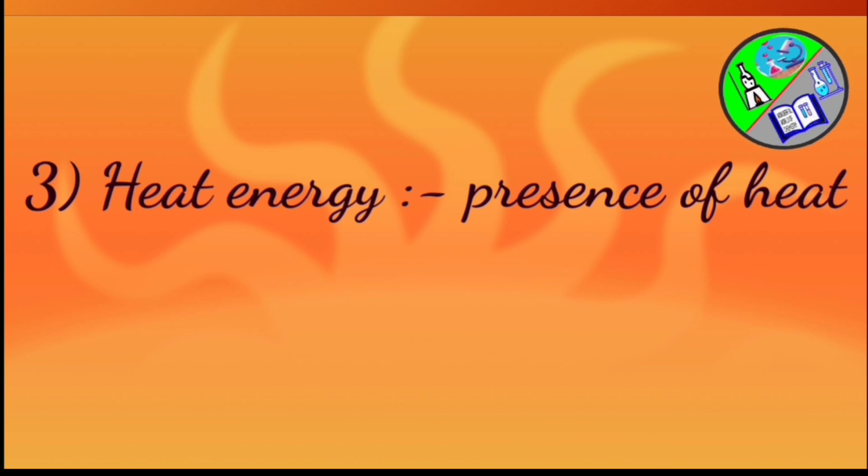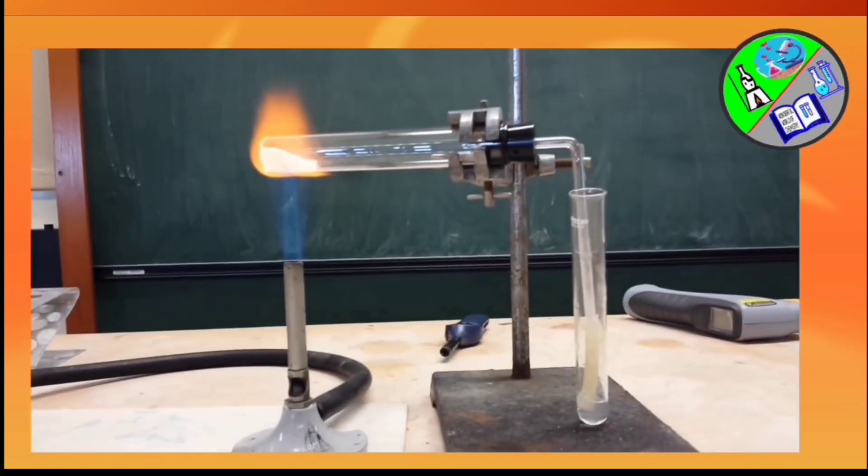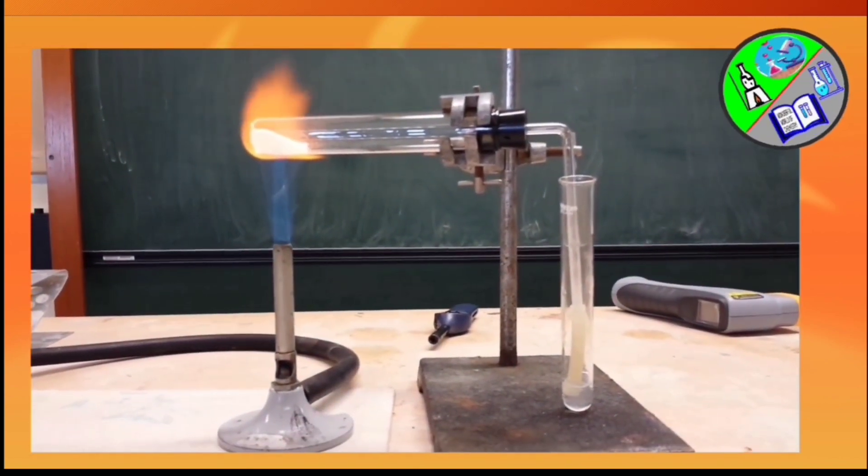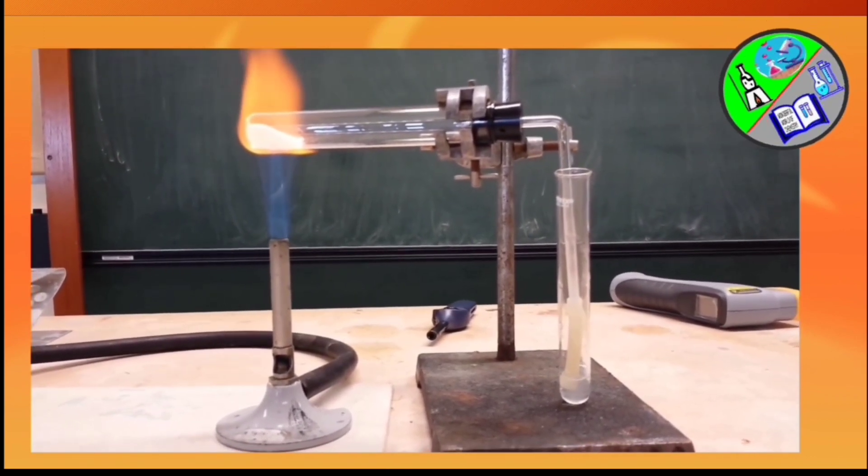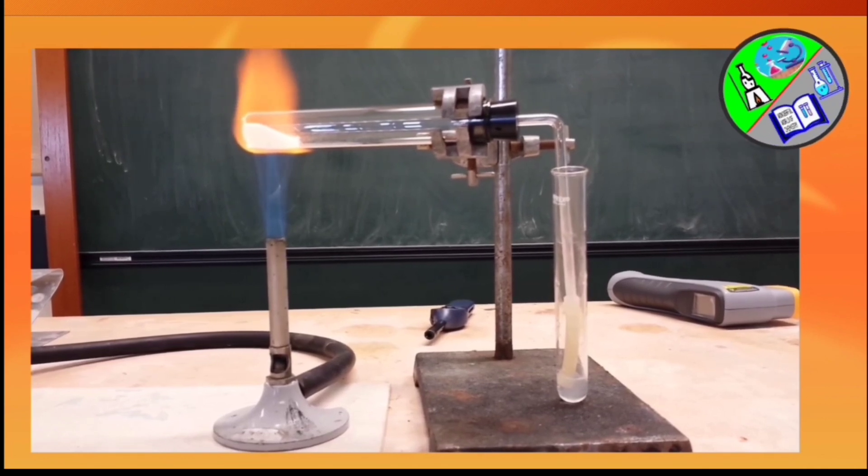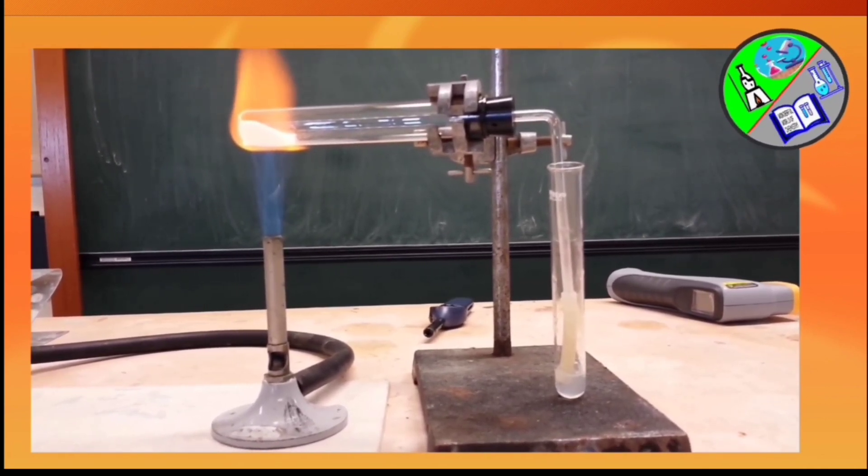Third is heat energy. Some chemical reactions don't react until additional heat is provided. When calcium carbonate is heated, it gives calcium oxide with liberation of carbon dioxide gas. Here in this experiment we can see when calcium carbonate is heated in the first test tube, some bubbles are coming out in the second test tube which shows the liberation of carbon dioxide gas.